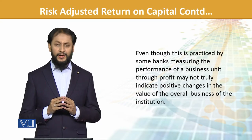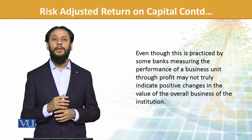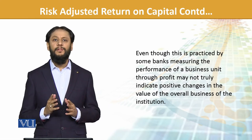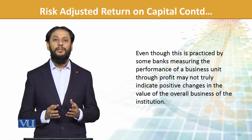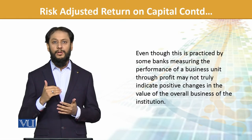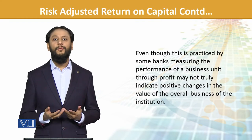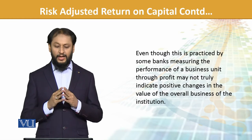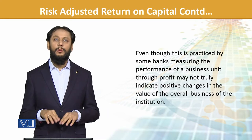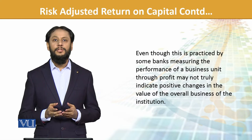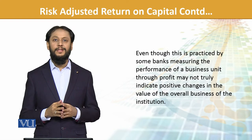Even though some banks measure performance of business units through profit alone — how much profit a unit earned — that is not a true reflection, because they could have taken extraordinary risk to achieve that profit. That is not what we desire. We want to identify who performs best at a given level of risk — that is the true performance we want to gauge. RAROC helps us here, and with a unit structure, we can easily gauge overall business profitability and returns based on risk appetite.